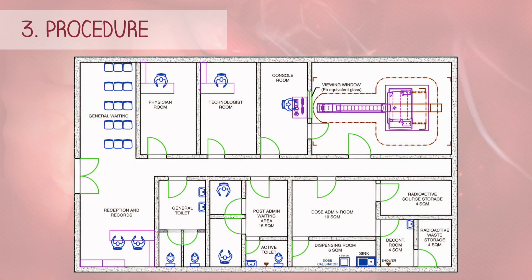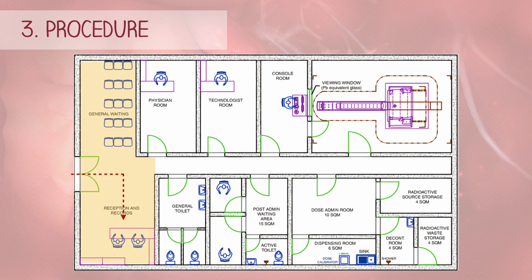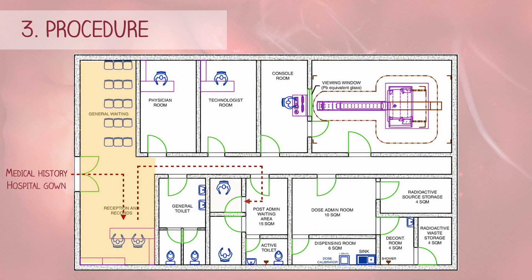Now let's run through the procedure. When you arrive at the hospital, the first step is to check in with a receptionist and answer some questions about your medical history. You will then be asked to wear a hospital gown and remove any metal objects, such as jewelry, as these might interfere with the image.